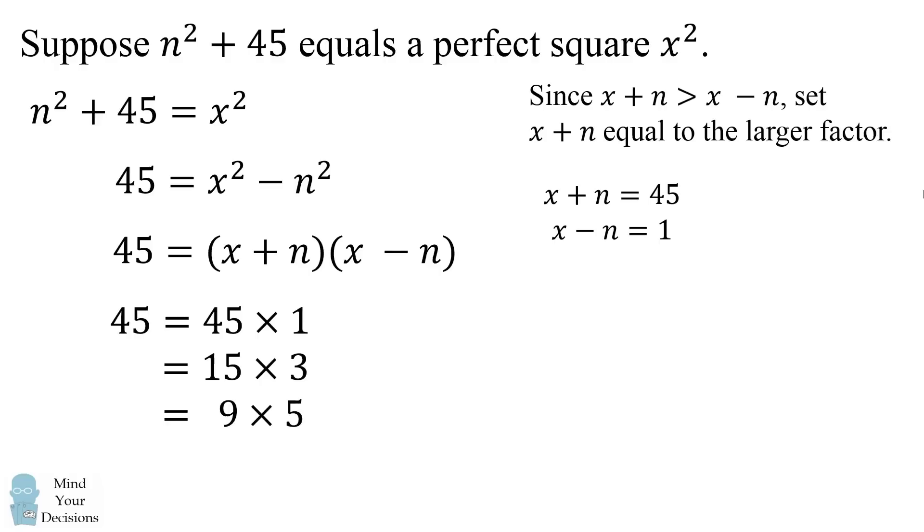So from the first possibility, we set x plus n to equal 45 and x minus n to equal 1. In the next possibility, we have x plus n equals 15 and x minus n equals 3. We then have x plus n equals 9 and x minus n equals 5.